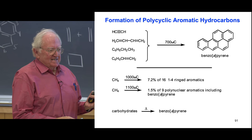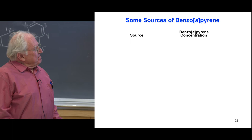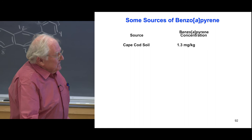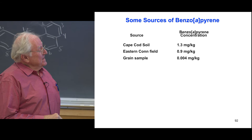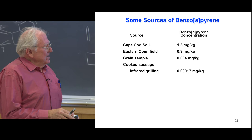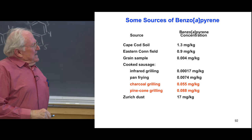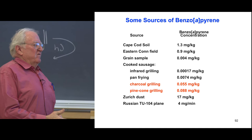Looking at sources of benz pyrene: it's on soil, settles from airplane and automobile exhaust. If you cook sausages, microwave is the best way — never use pine cones as a fuel source. It's in big city dust and airplane exhaust, so it really is everywhere. Fortunately, we have ways to prevent getting cancer even though we're exposed to these compounds all the time, including vitamins we'll talk about. Burning wood, forest fires, bonfires — all sources of benz pyrene.